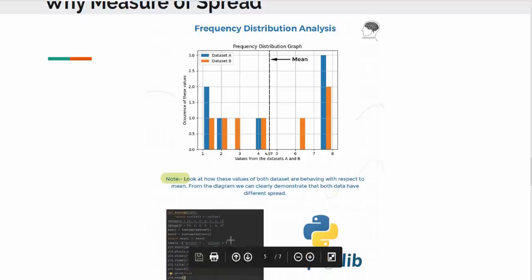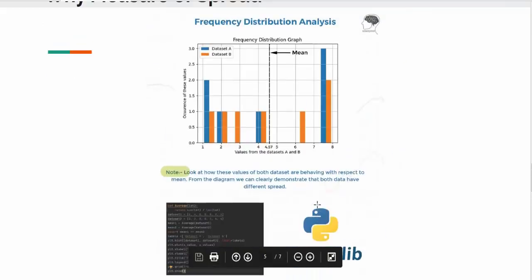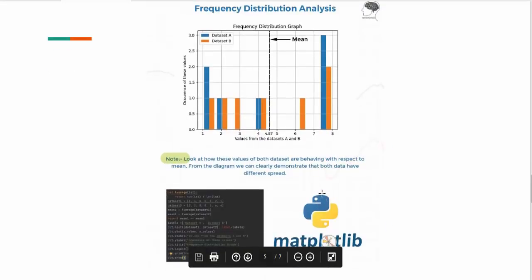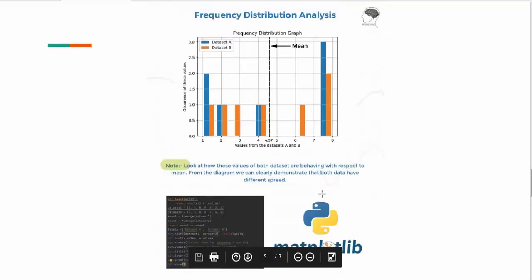This is a small code how I implemented that, and matplotlib is used to draw the graph. So in short, what I say is that whenever you get a dataset, you go with both the measures: the measure of spread and the measure of central tendency.